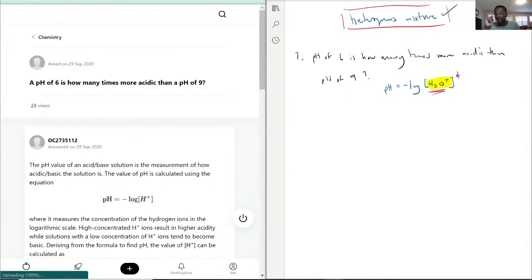If you remember your logarithmic rules, the way you do that is you move the negative over there, so it would be negative pH is equal to log of H3O.